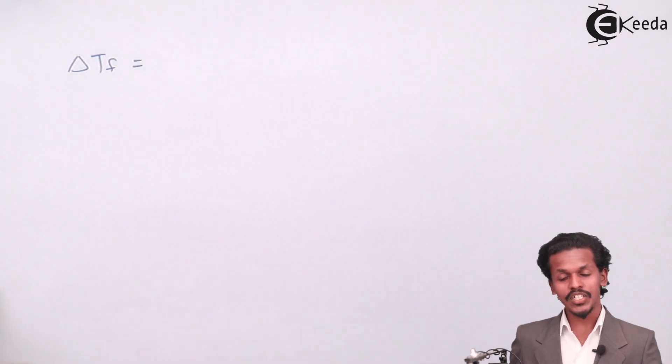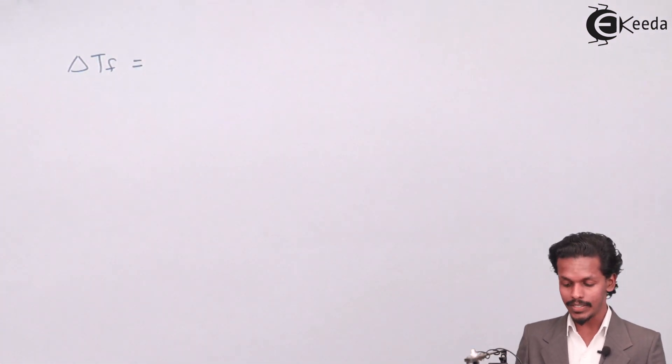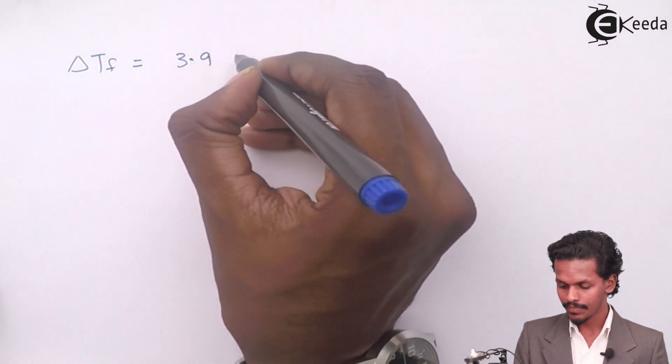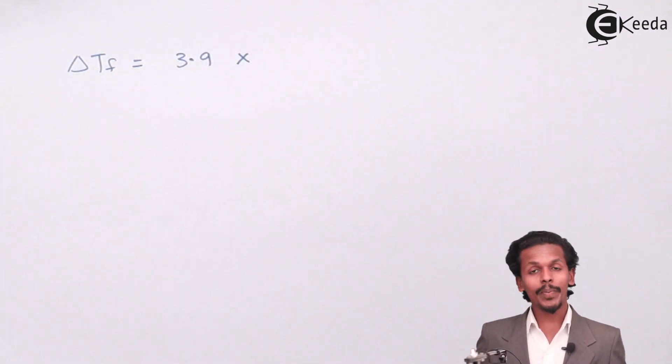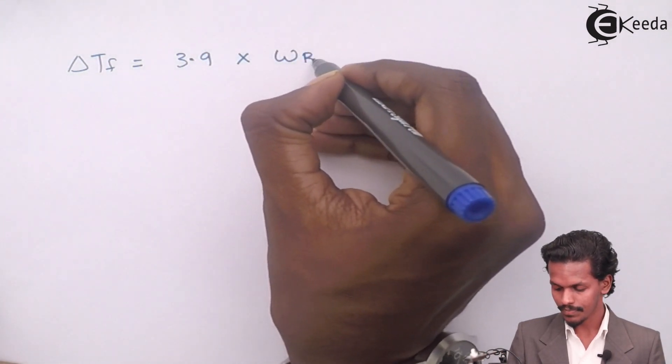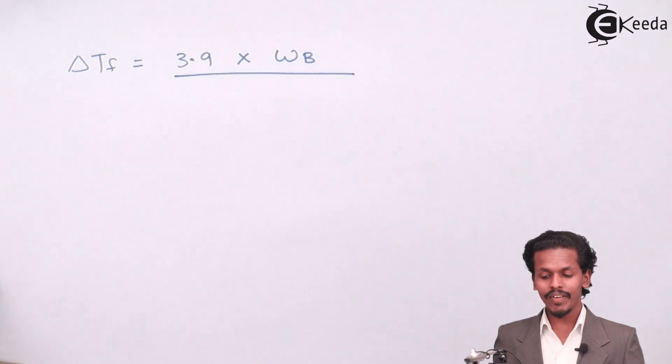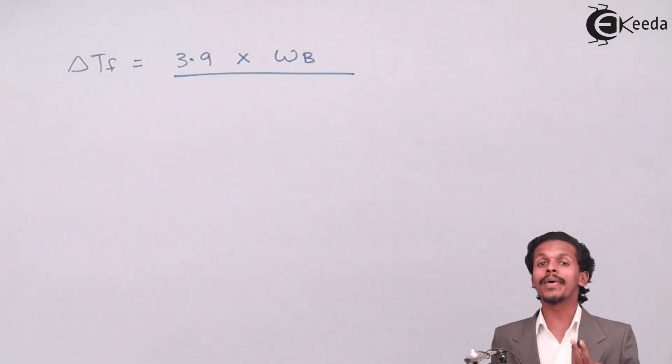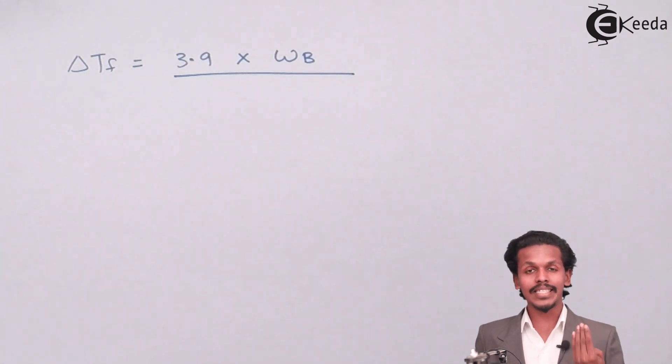The KF given to us is 3.9, WB is to be found, divided by MB. In this case MB was 176 gram per mole but we will convert it into 176 into 10 raised to minus 3 kg.